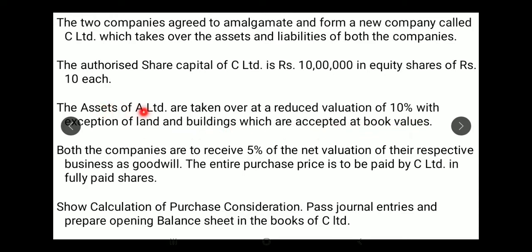B Limited's assets are taken at book value including liabilities, which are also taken over at book values. There is no revaluation mentioned for B Limited. For A Limited, assets are taken at 10% less than book value — for example, if the balance sheet value is 1 lakh rupees, after deducting 10%, it becomes 90,000 rupees, so 90,000 is the worth considered.